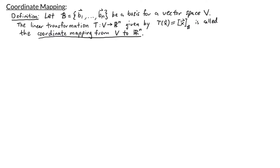Let b be a basis for a vector space V, consisting of vectors b1 through bn. The linear transformation T from V to Rn given by T of x equals the b-coordinate vector of x is called the coordinate mapping from V to Rn. What this allows us to do is think about elements in a vector space as column vectors that we're used to.